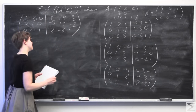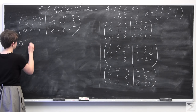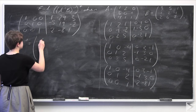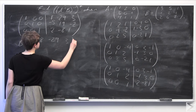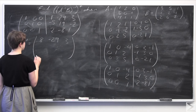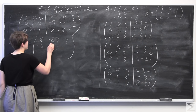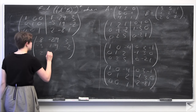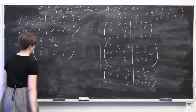So now we know that B inverse equals the matrix: top row 8, -29, 3; second row -5, 19, -2; bottom row 2, -8, 1.